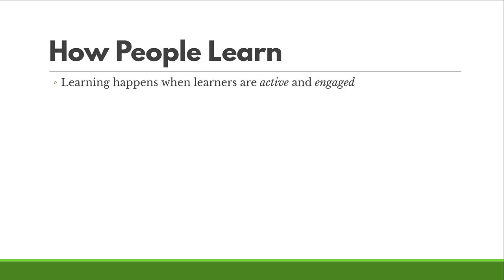How people learn really comes down to learners being active and engaged. All learning happens by the learner actually doing something — even just thinking really hard on a given subject. The learner has to be active and engaged. If they're not motivated, if they're checked out, they're not going to be learning. Feedback is also really critical to the learning process. If your learner is learning something new, they need to figure out if they have it right. They try out what they know, get feedback on their understanding of a new topic, and use that feedback to correct misunderstandings.